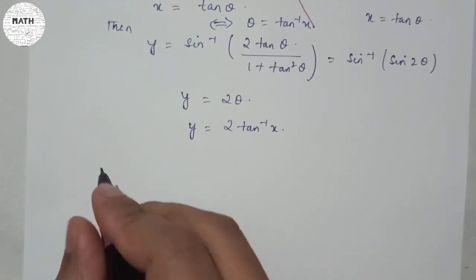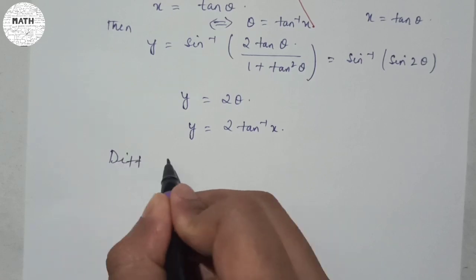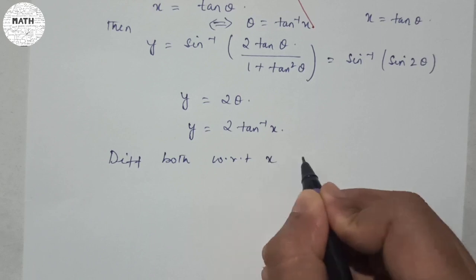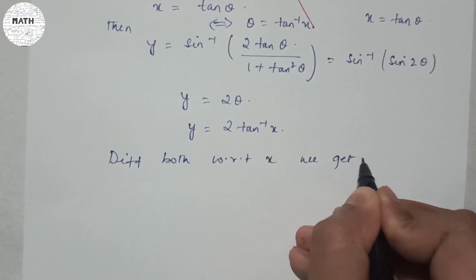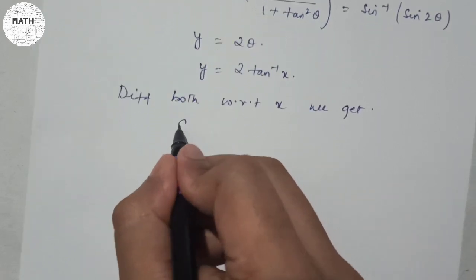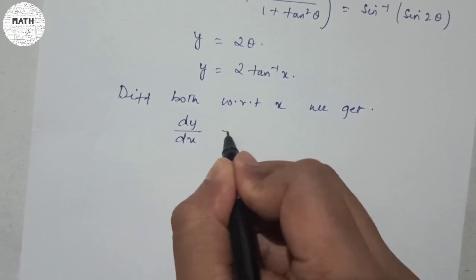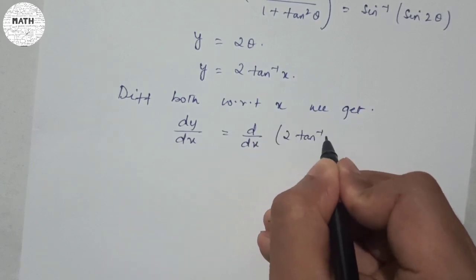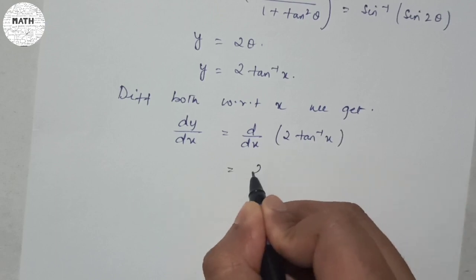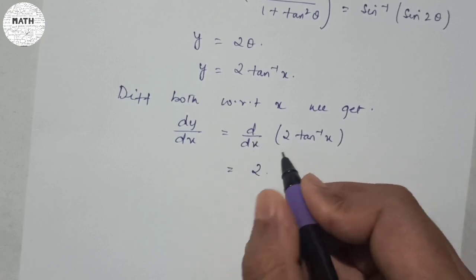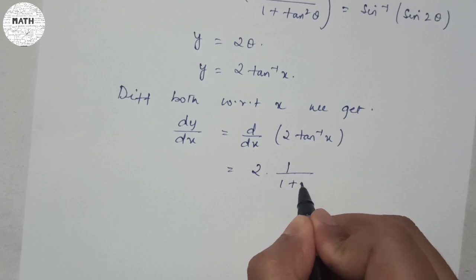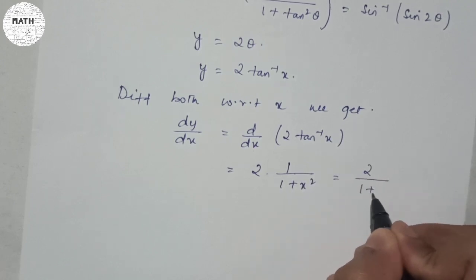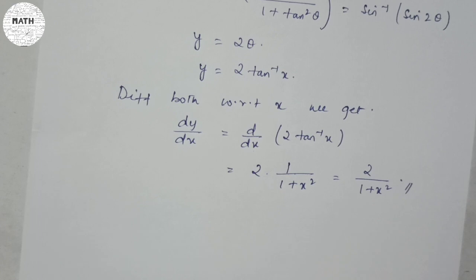Differentiating both sides with respect to x: dy/dx = d/dx of 2 tan⁻¹x. Since 2 is constant and d/dx of tan⁻¹x = 1/(1 + x²), we get dy/dx = 2 / (1 + x²). That is the answer.